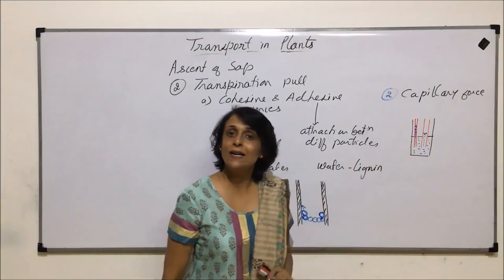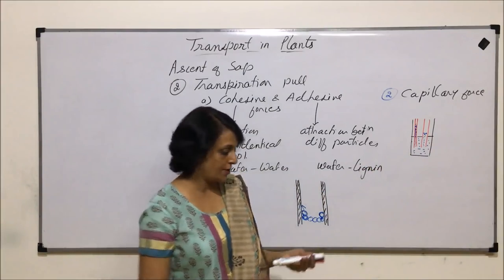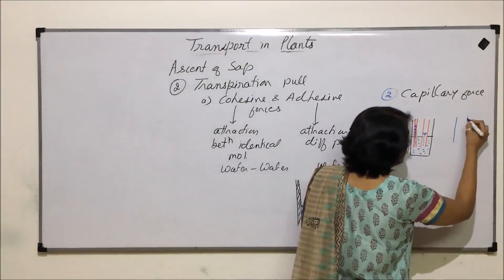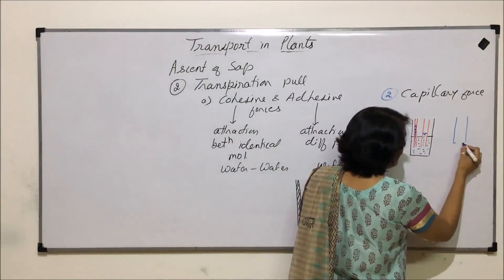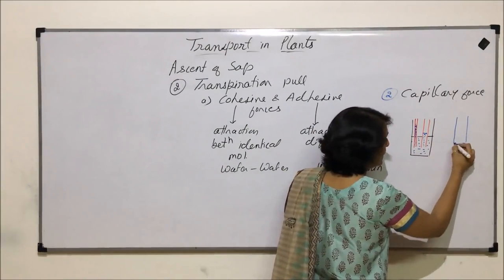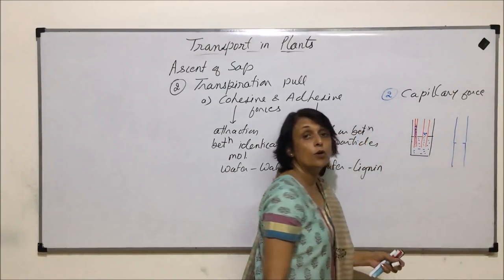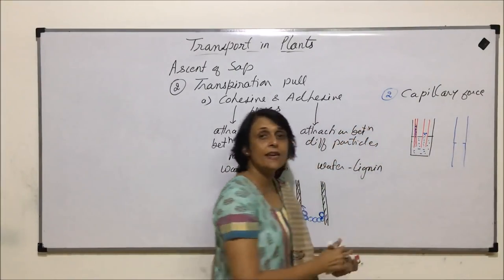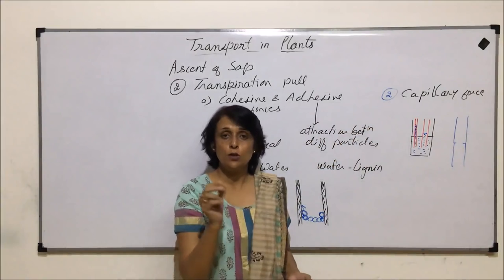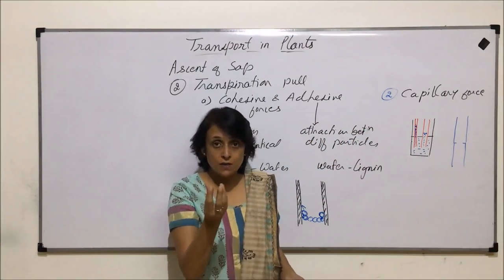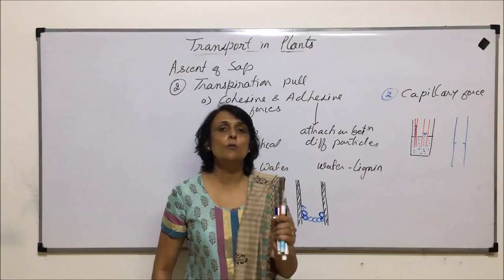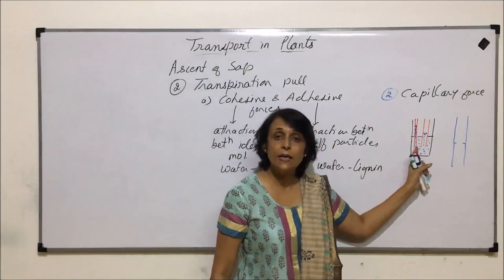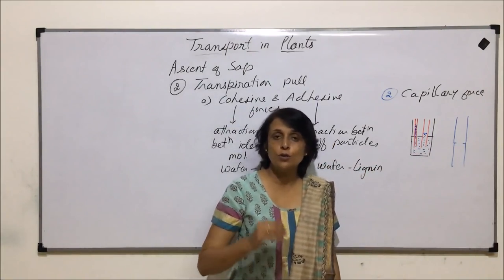This property is called capillarity, and the thin tube is called a capillary. Xylem vessels are made up of cells in which the wall between adjacent cells is lost, and that results in the formation of a very thin capillary. The lumen of xylem vessels is extremely thin, and if the tube is thin, water is going to rise to a certain height.